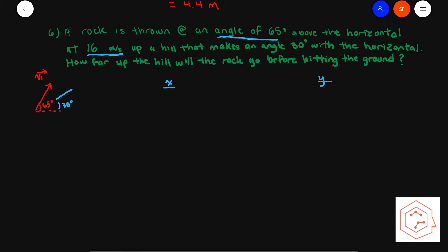Looking at our quick sketch, we'll see that if we break the initial velocity into x and y components, the x component is related through cosine since you are solving for the adjacent side, and for your y component you're solving for the opposite side, so you're using sine. So v1x would be equal to cos(65°) times 16 meters per second, which gives you 6.762 meters per second.